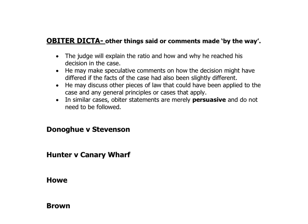Moving on to the Obiter. Once the judge has given the ratio, which is not going to be that many lines long, they then basically talk about other things — terms mentioned 'by the way.' In other words, everything else they thought about during that case: why they made that decision, the different things they considered, other cases they looked at, and other possibilities they thought of but then changed their mind about. A lot of the time it's the explaining of how they came up with the decision they have made.